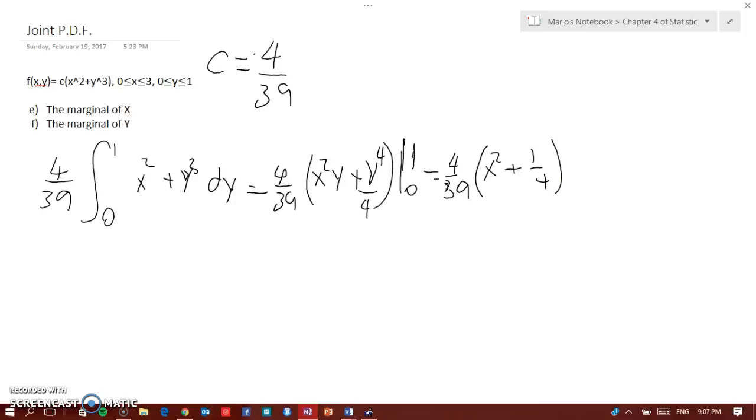Not done yet, because this is the marginal PDF. You have to also put the limit, which is going to be the x limit. So we need 0 less than or equal to x less than or equal to 3.